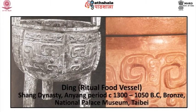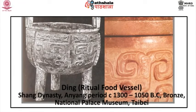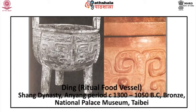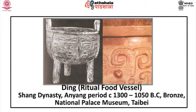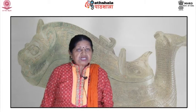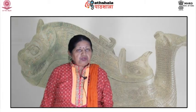A ding ritual food vessel belonging to the Shang dynasty, Anyang period, dated to 1300–1050 BCE, made of bronze, now in the National Palace Museum, Taipei. Set against a thunder pattern of squared spirals, the symmetrical taotie animal mask is made up of a variety of zoomorphic facial elements with an emphasis on the raised eyes. It can also be viewed as two confronting horizontal creatures in profile with clawed feet and upturned tails.